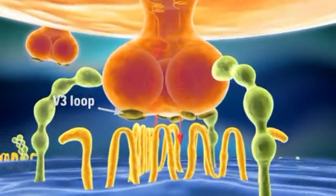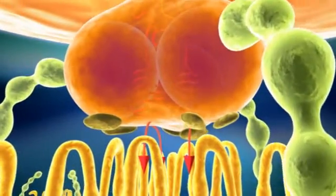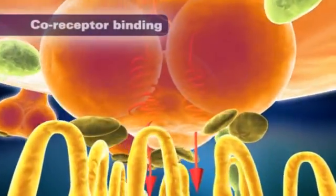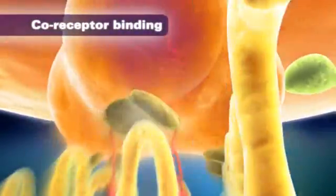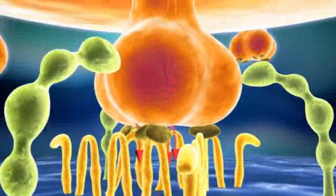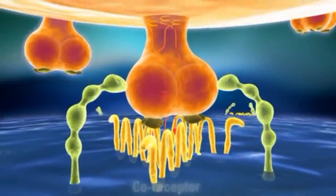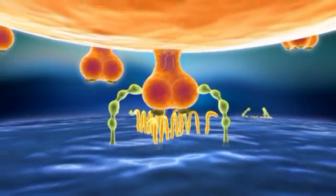Next, GP120 undergoes a conformational change, which allows it to bind to a second receptor, or co-receptor, on the host cell surface. Binding to the co-receptor is critical to the virus, as without this event, HIV cannot enter the cell.